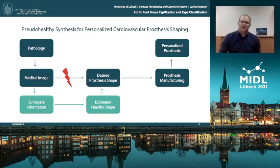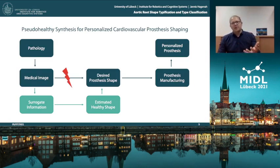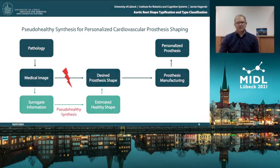Based on the surrogate information, we can estimate a healthy shape that corresponds to the desired prosthesis shape. This mapping is what we call pseudo-healthy synthesis.